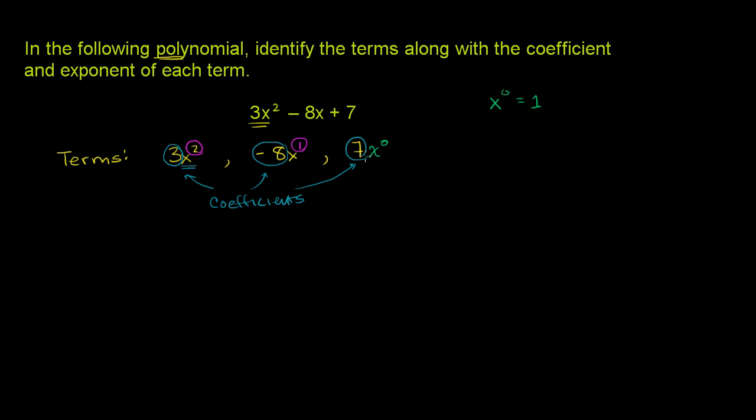And then on this last term, we already said, this 7 is the same thing as 7x to the 0. So the exponent here on the constant term on 7 is 0. So these things right over here, those are our exponents. And we are done.